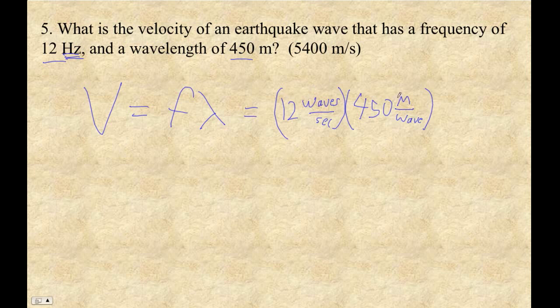So 12 times 450 is 5,400. And then this ends up being meters per second. Yay.